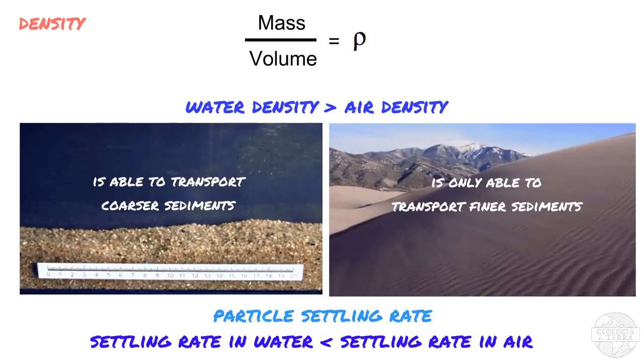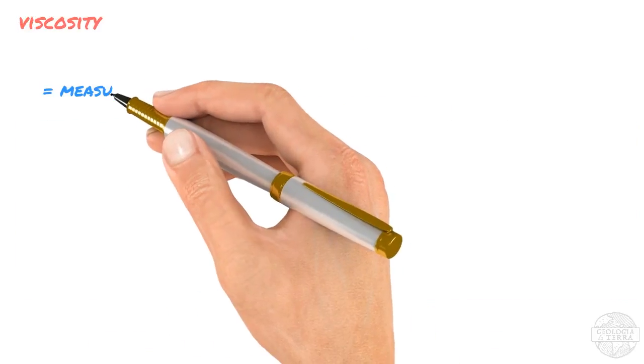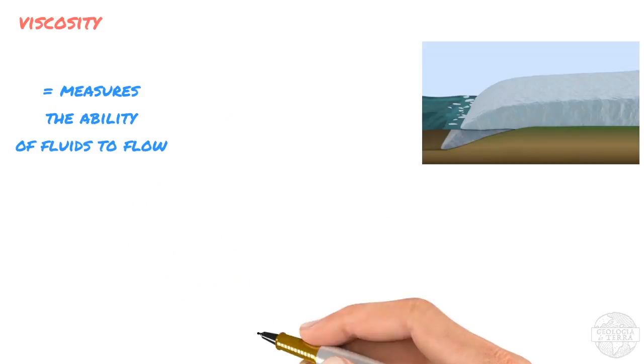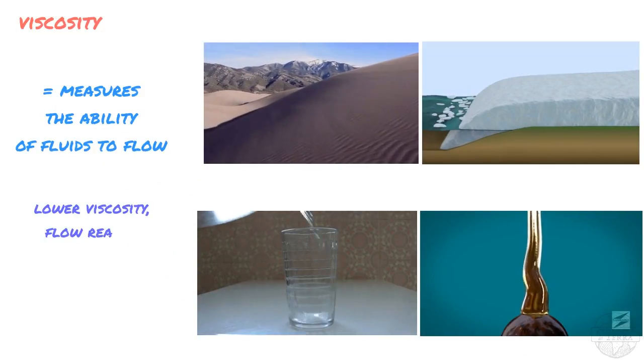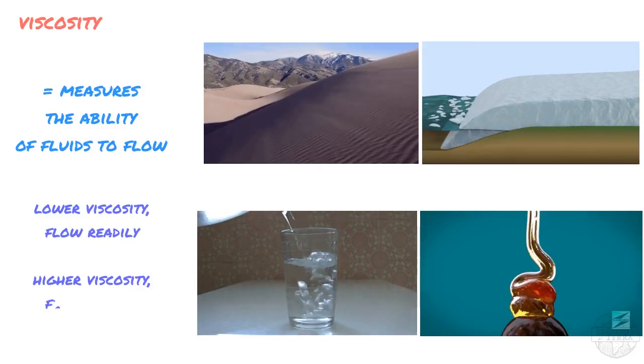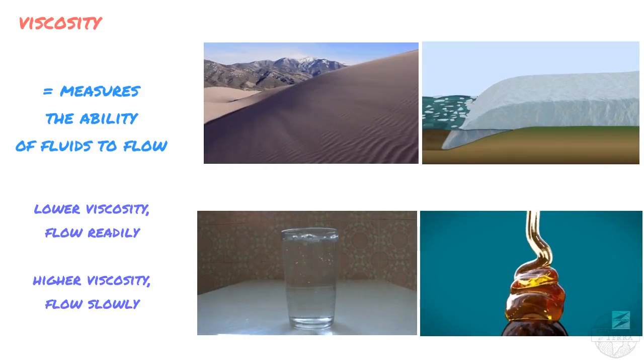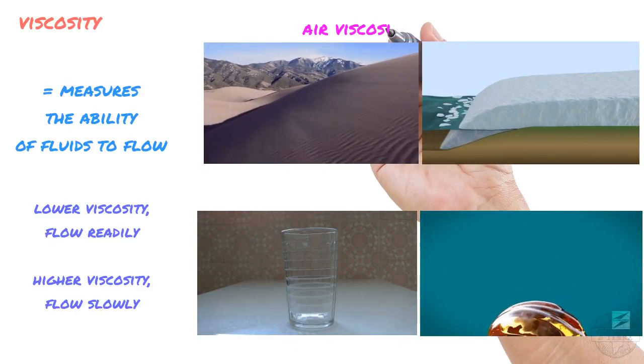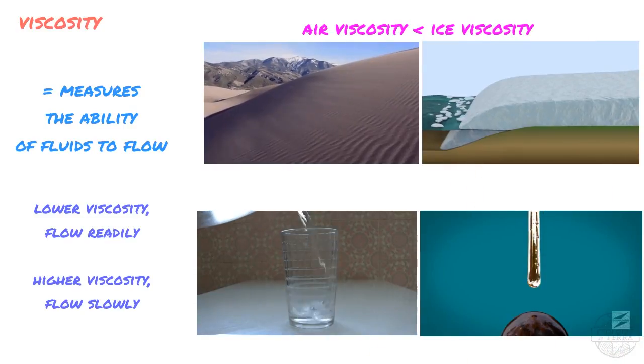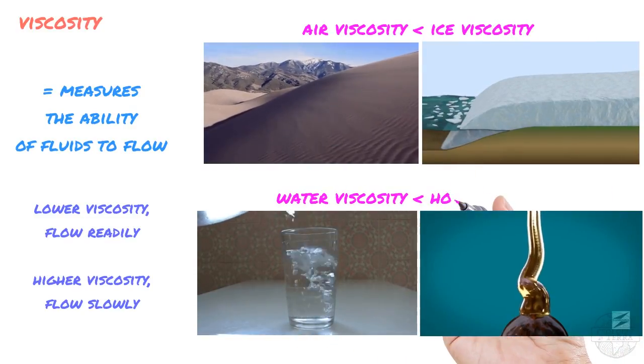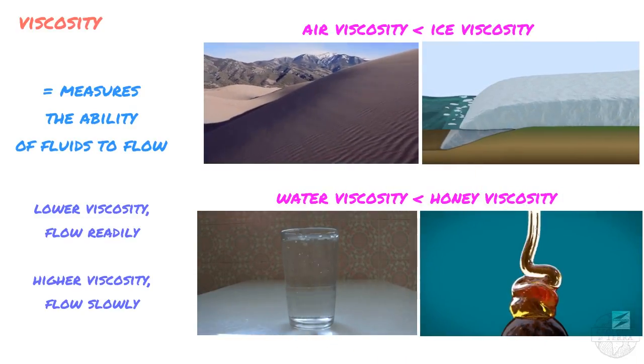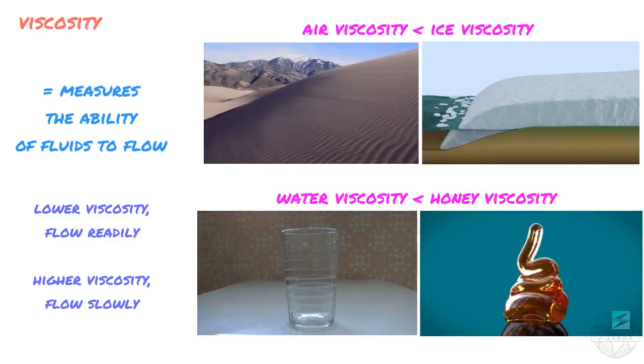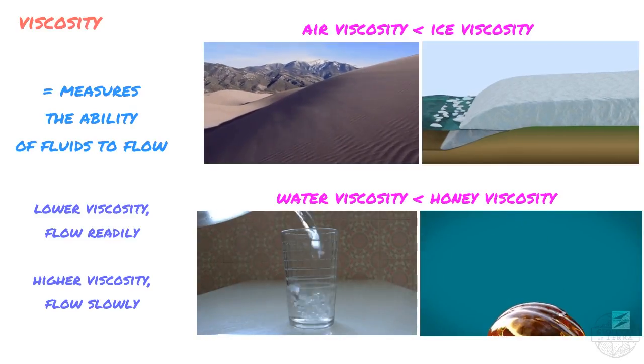Now density is different from viscosity, which is just a measure of the ability of fluids to flow, where fluids with lower viscosity flow readily and fluids with higher viscosity flow slowly. For example, air has low viscosity relative to ice, and water has low viscosity relative to honey. This is important for us because viscosity plays a key role in the turbulence of water, as we'll see next.